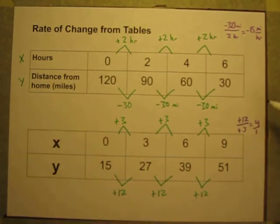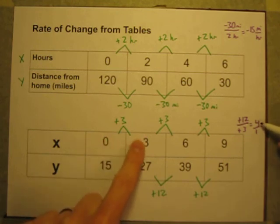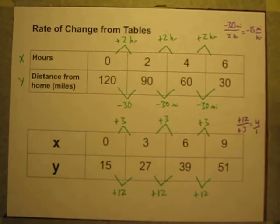So this rate of change means for every 1 x I get, I get 4 extra y's. 1 extra x means I'll get 4 extra y's, or 4 y's per x.